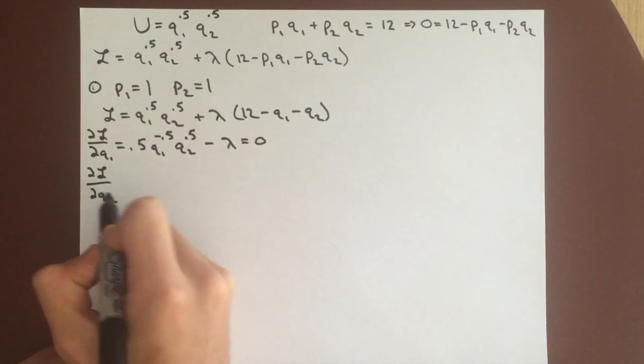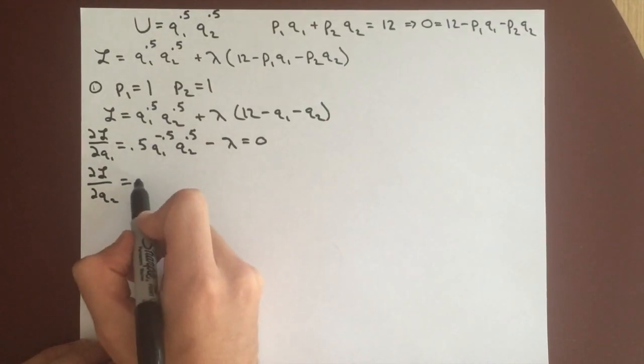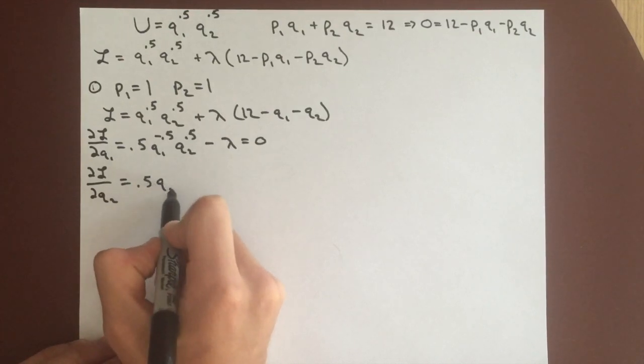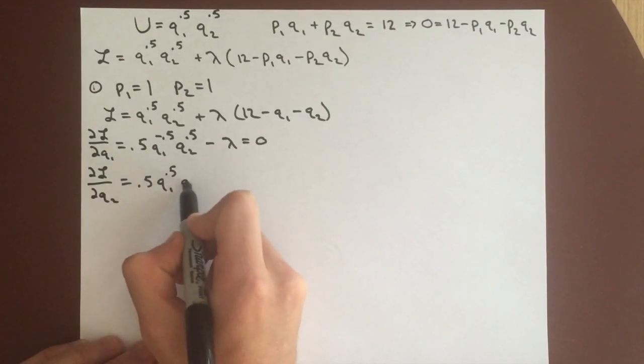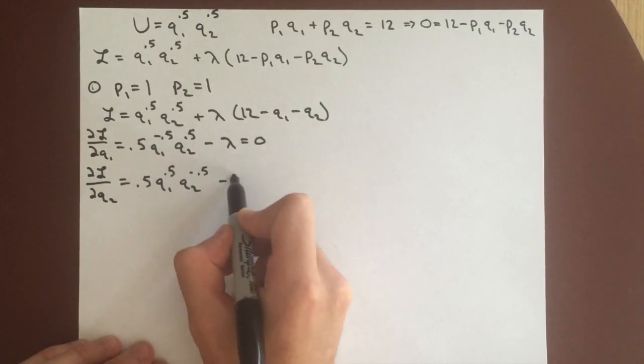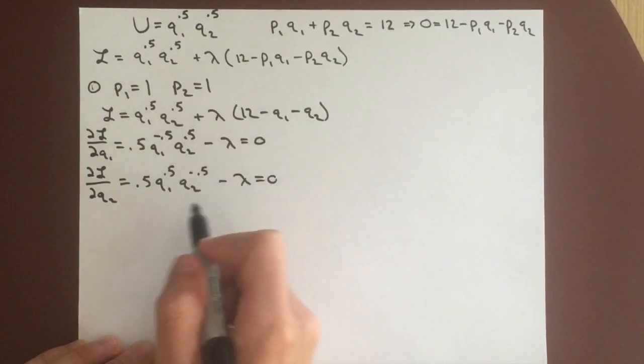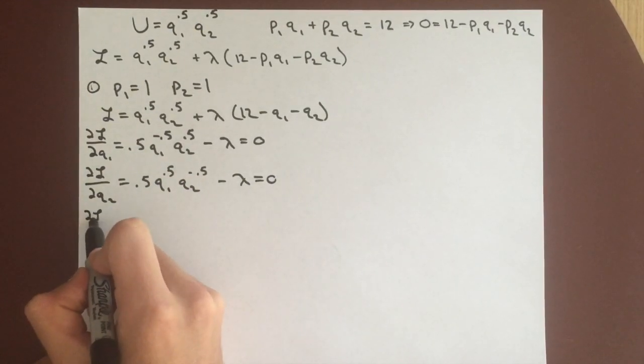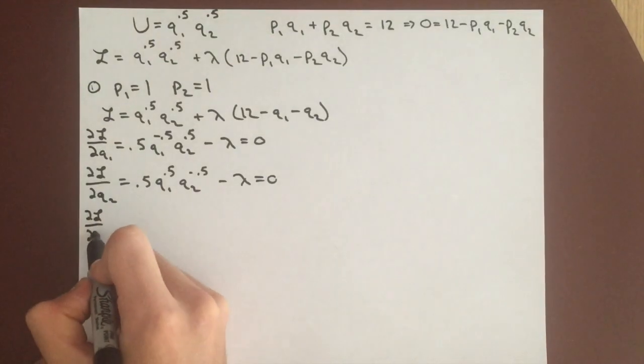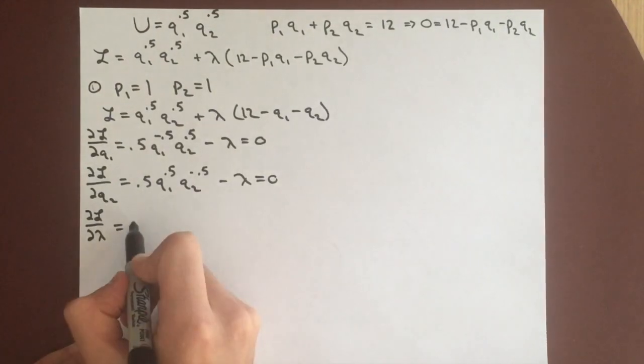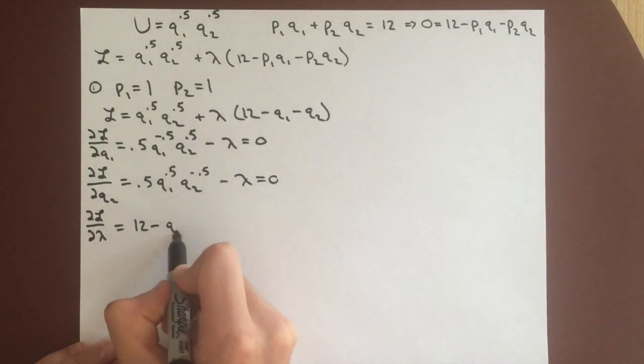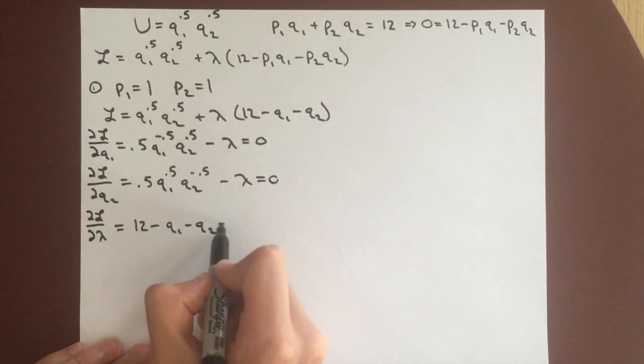For partial derivative of q2, we get 0.5 q1 to the 0.5, q2 to the negative 0.5, and again a minus lambda equals 0. And for partial derivative of lambda, we get 12 minus q1 minus q2 equals 0.